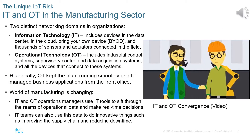Organizations often have two distinct networking domains: information technology (IT) and operational technology (OT). IT includes devices in the data center, in the cloud, bring-your-own-device, and thousands of sensors and actuators connected in the field. OT includes industrial control systems, supervisory control and data acquisition (SCADA) systems, and all the devices that connect to these systems. By converging IT and OT, operations managers can use IT tools to sift through operational data and make real-time decisions, improving the supply chain and reducing downtime.